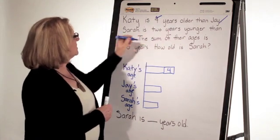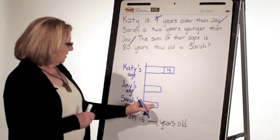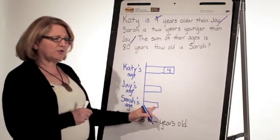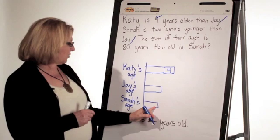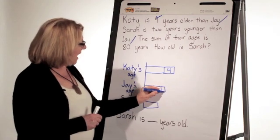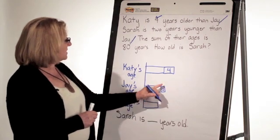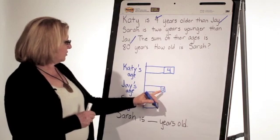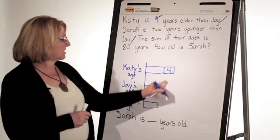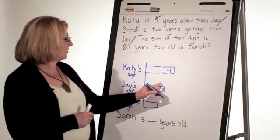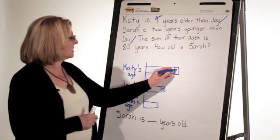Sarah is two years younger than Jay. Stop. If I cross two years off of Sarah, that's not going to work. How about if I add two years to Jay? Now Sarah is two years younger than Jay. But now Jay isn't two years younger than Katie, so I'm going to have to add two years here, too.